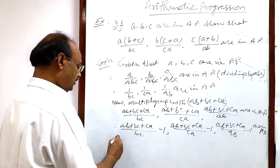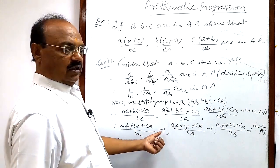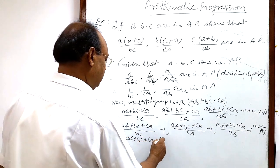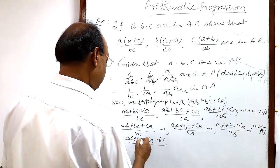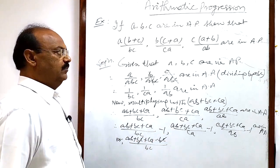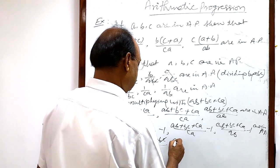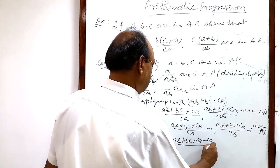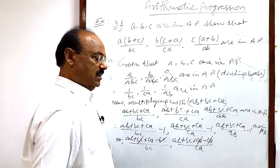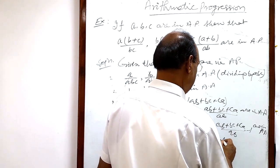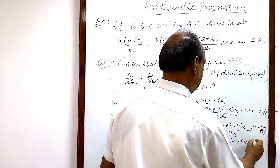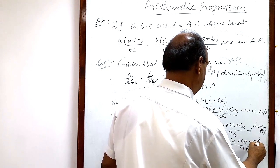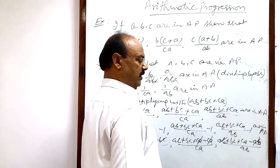Now we will simplify. We get: (AB + BC + CA − BC) upon BC — so plus BC and minus BC will be cancelled out. Similarly, (AB + BC + CA − CA) upon CA — plus CA and minus CA will be cancelled out. And (AB + BC + CA − AB) upon AB — plus AB and minus AB will be cancelled out.